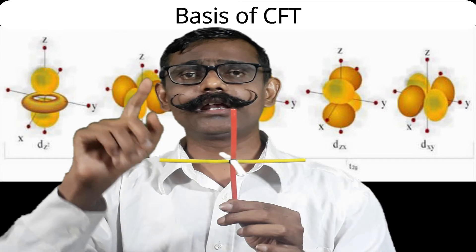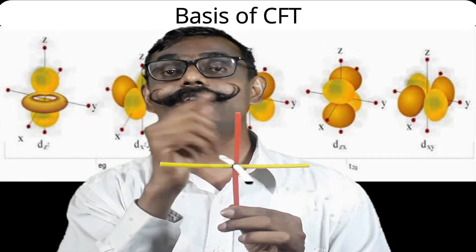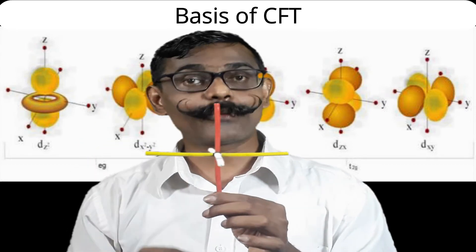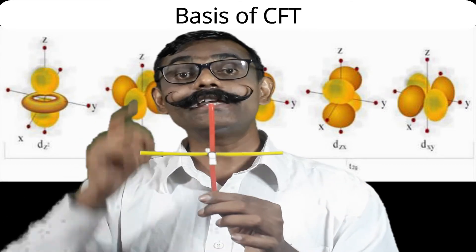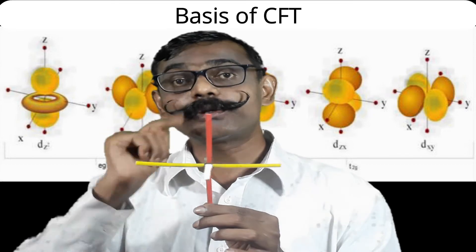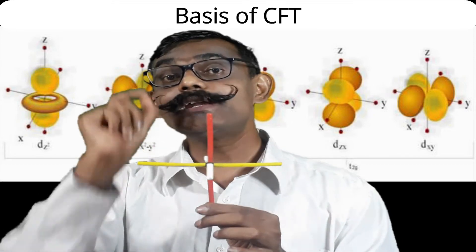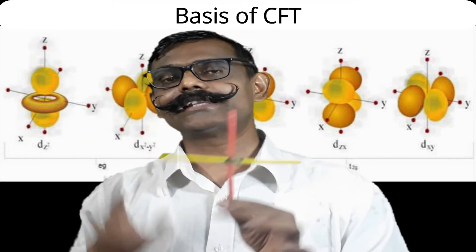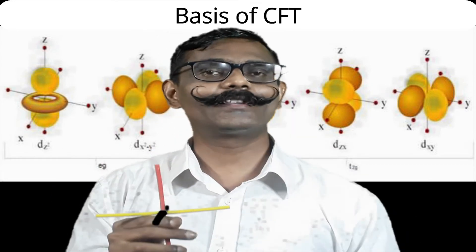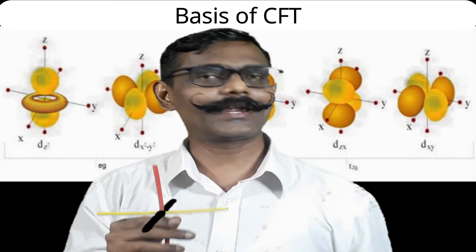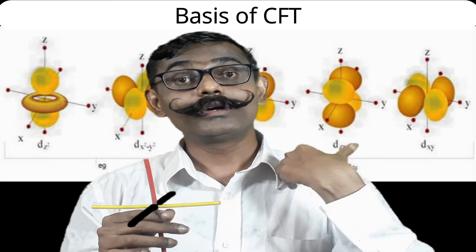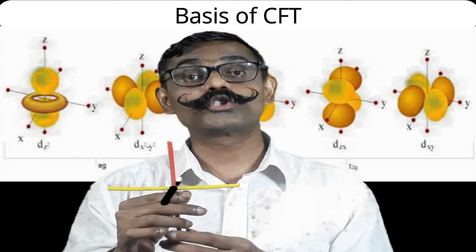If you know the shapes, you can understand what changes occur. The dz² orbital is along z and in the xy plane; dx²-y² is along x and y; dyz is between y and z; dxz is between x and z; dxy is between x and y. With this understanding, the basis of Crystal Field Theory is clear.